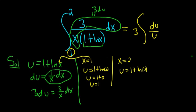And then our lower limit was 1 and it's still 1. Our upper limit was 2 and now it's 1 plus ln 2, so this is 1 plus the natural log of 2.